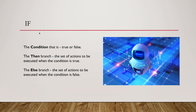The condition evaluates to true or false. Based on the output of the condition, the if activity will decide which branch it is supposed to flow to. If the condition is true, then the set of actions in the then-branch will be executed. If the condition is false, the else branch will get executed.